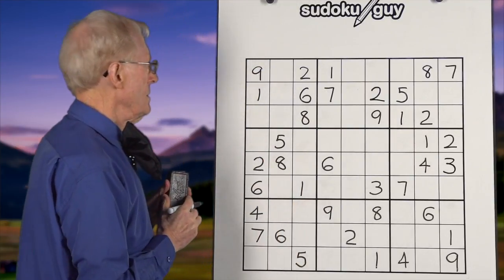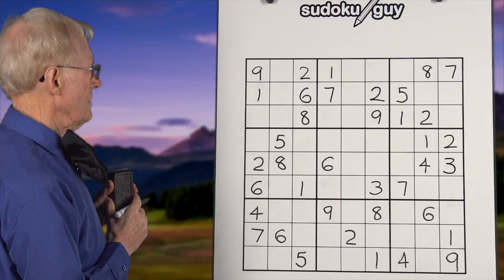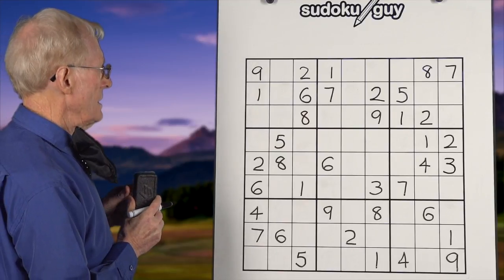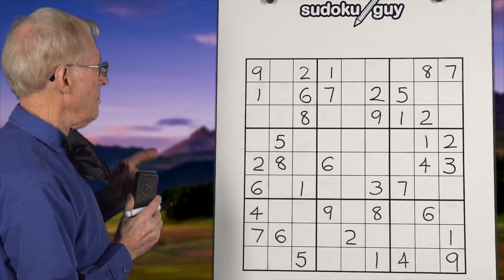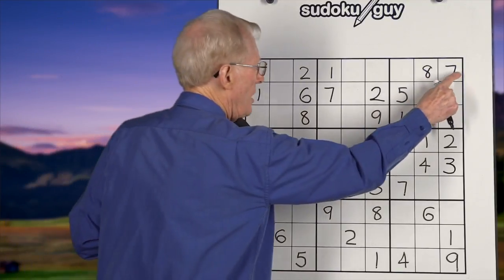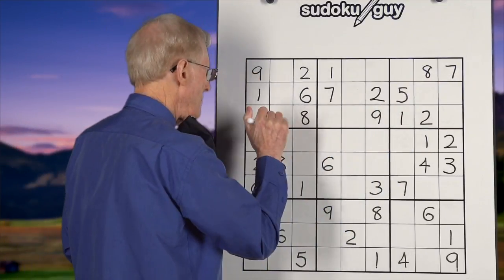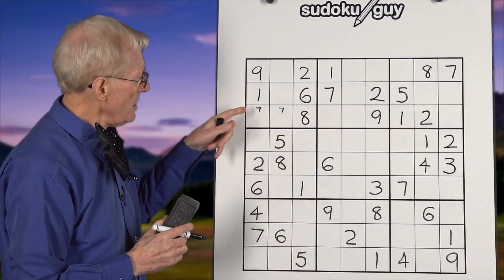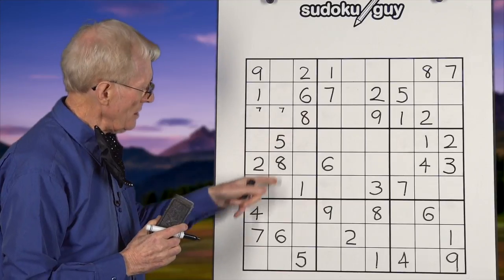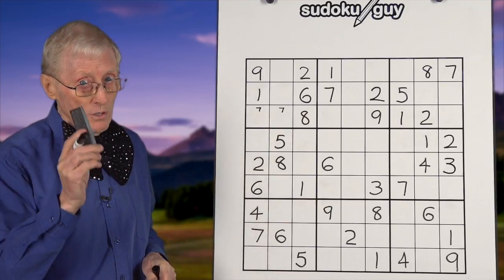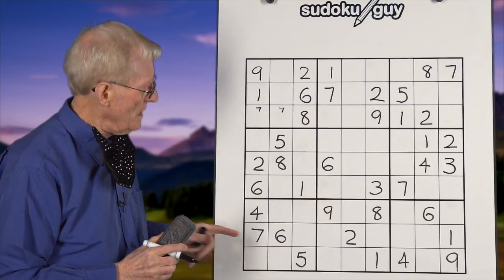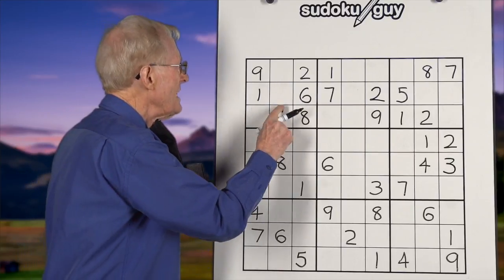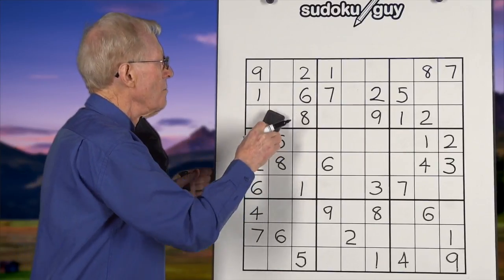There are no 3s and no 4s. There's only one 5 and only one 6. Moving to 7s: we have two 7s — a top, a middle, and here we could have a 7 in either of two cells. We look down those columns to see if there's a 7, and there is a 7 here, which means this cannot be a 7 because you can't have two 7s in a column. So this has to become the 7 — we'll put a 7 in there.